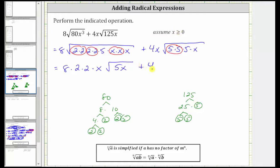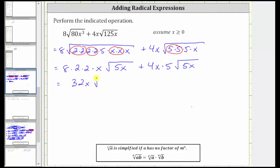And then we have plus 4x times the square root of five times five or five squared, which simplifies to one factor of five. And then we still have the square root of 5x. And now let's multiply the factors outside the square roots. Here we have eight times two times two times x, which is 32x square root of 5x. And then we have plus 4x times five is 20x square root of 5x.